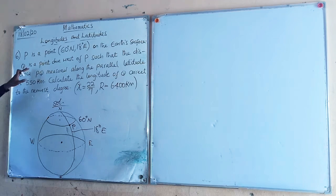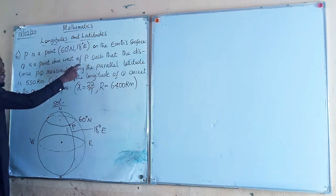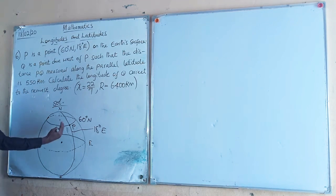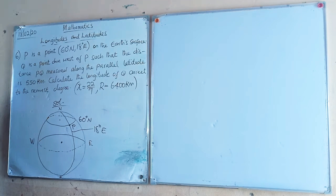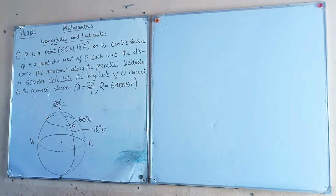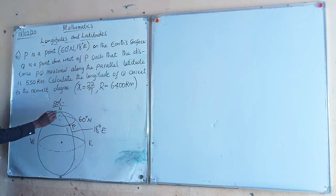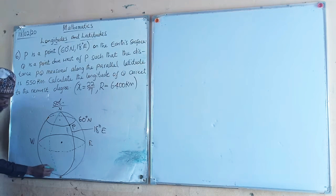Q is another point on the earth which is due west of P. It could be at any position from this point, but we don't know exactly where it is. We can just assume. Let me use broken lines because we are not sure of its exact position.